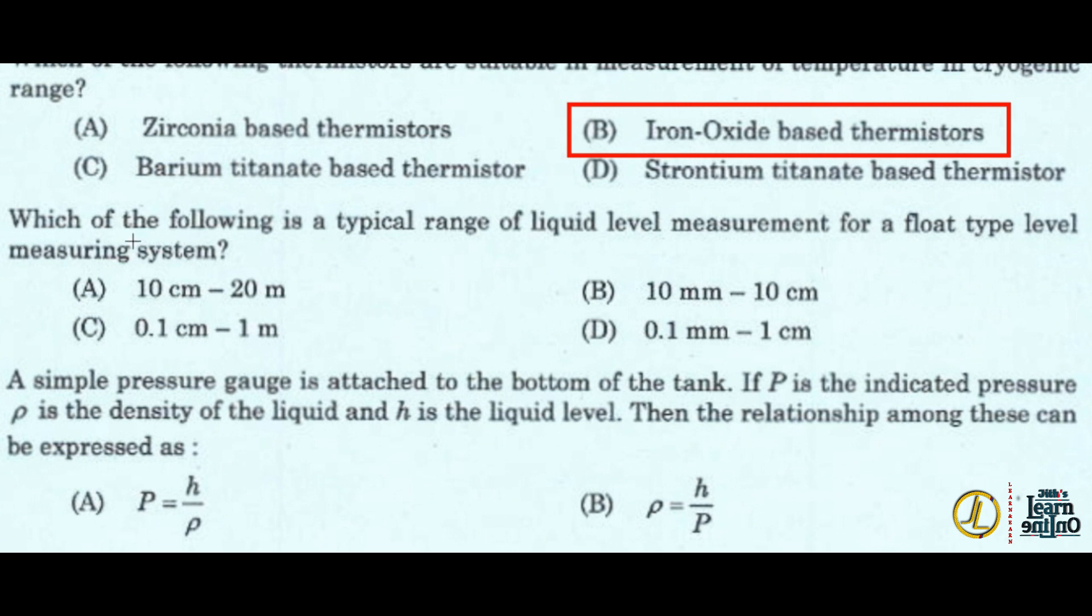Which of the following is a typical range of liquid level measurement for a float type level measuring system? Option A, 10 centimeter to 20 meter.